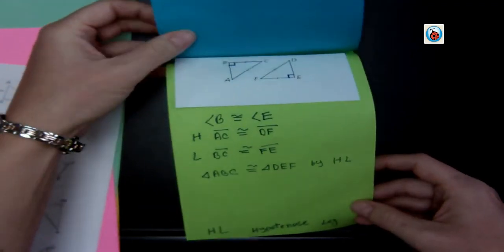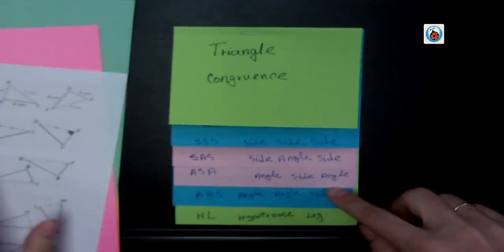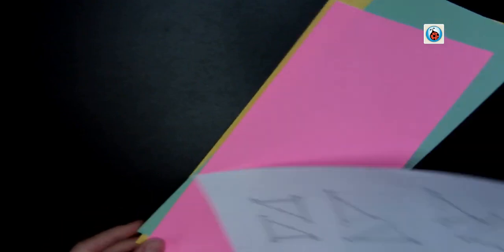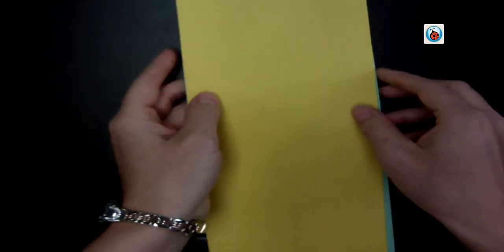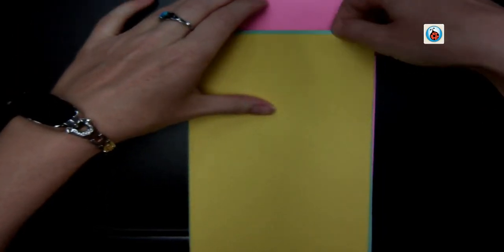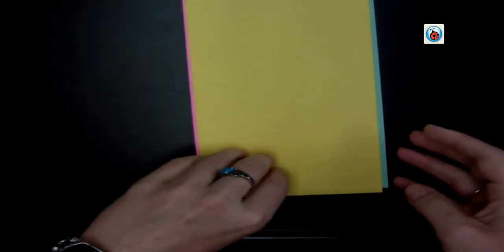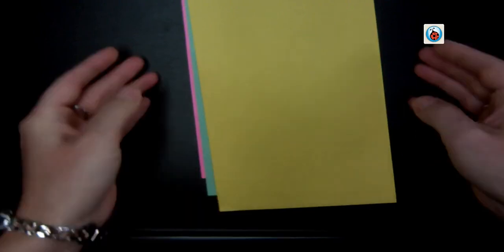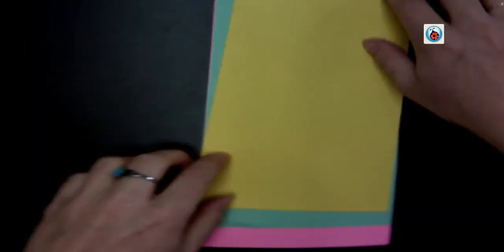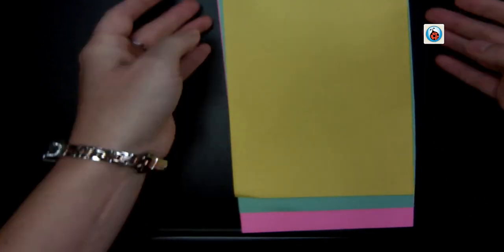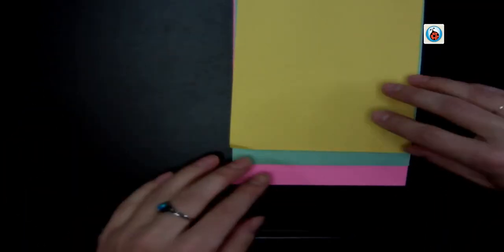And so your final one should look like this. So you're going to start by taking three sheets of paper. I want my pink on the outside, so I'm putting them like this. Then you set them so they are about one finger width apart down here, just enough to write on each one.